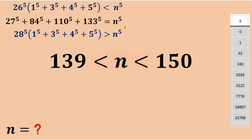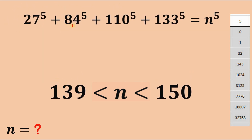We will now use the original equation and apply the shortcut for powers of 5 — specifically the units digit pattern. When any number is raised to the fifth power, the last digit of the result matches the last digit of the original number. For example: 1 raised to the fifth power ends in 1, 2 raised to the fifth power ends in 2, 3 ends in 3, 4 ends in 4, 5 ends in 5, and 8 raised to the fifth power ends in 8.